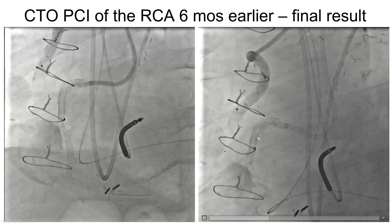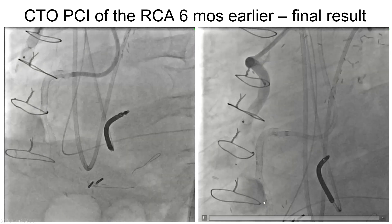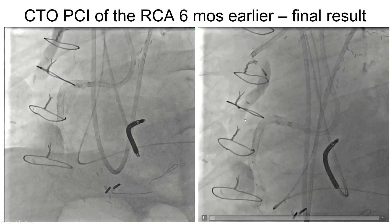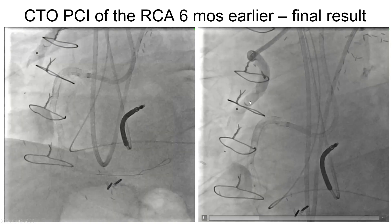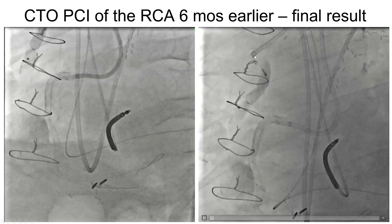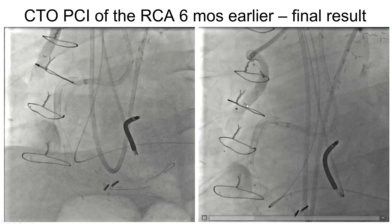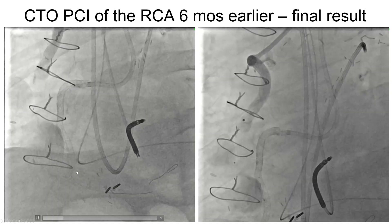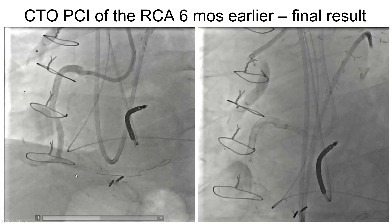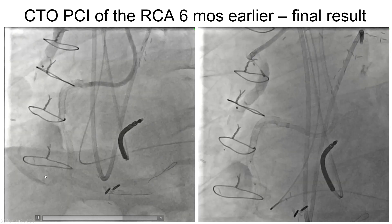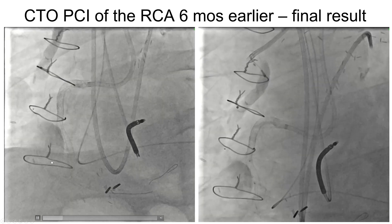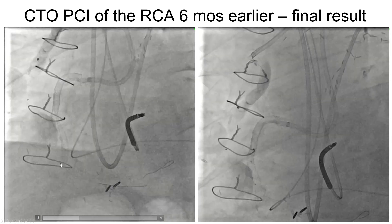Eventually, the RCA was successfully recanalized, and an Amplatzer vascular plug was placed in the proximal portion of the SVG, occluding the antegrade flow. However, there was still some retrograde flow into the SVG at the time, which we did not treat.